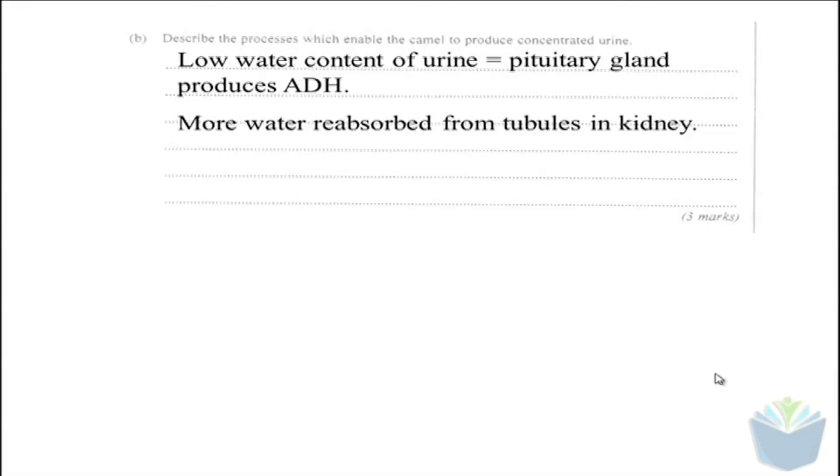Okay, so the last question is asking you to describe the process by which the camel produces more concentrated urine. So you need to remember that low water content of urine is caused by the pituitary gland producing more ADH. And the ADH makes the kidneys reabsorb more water. So once the kidneys have reabsorbed more water, you're going to have less water going into the urine, which is going to make it more concentrated. So what we're looking for is for you to state that the pituitary gland produces ADH, the kidneys reabsorb more water within the nephrons, so less water goes into urine.